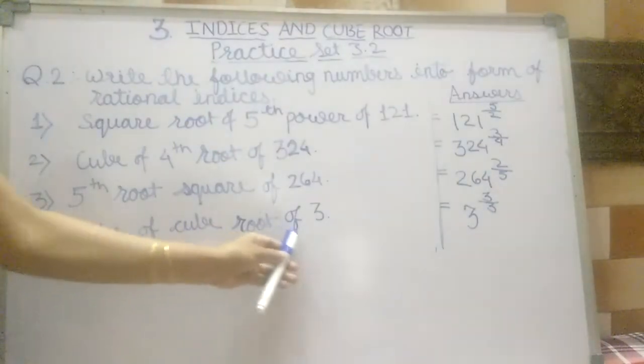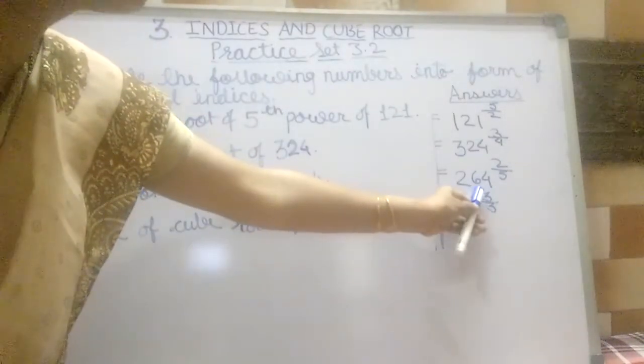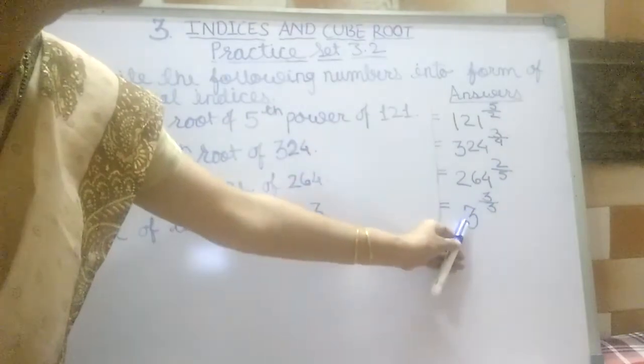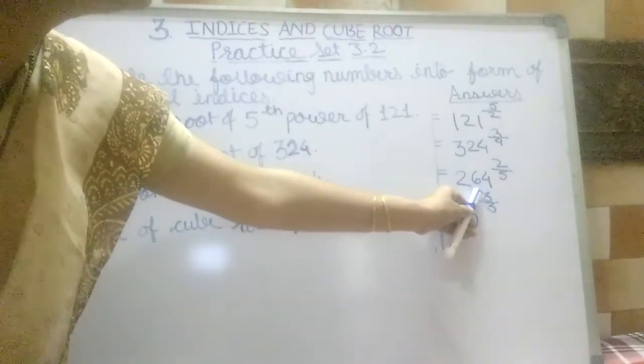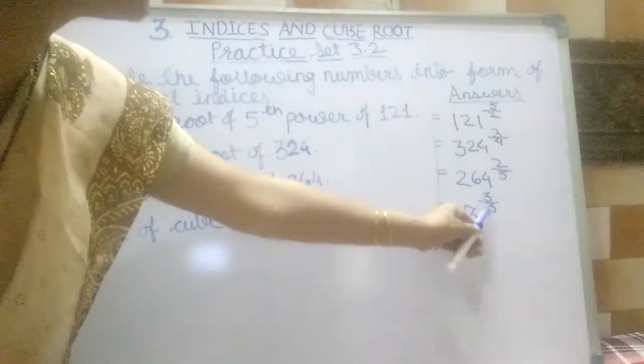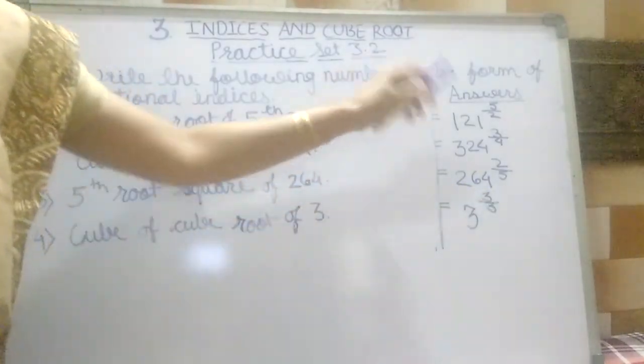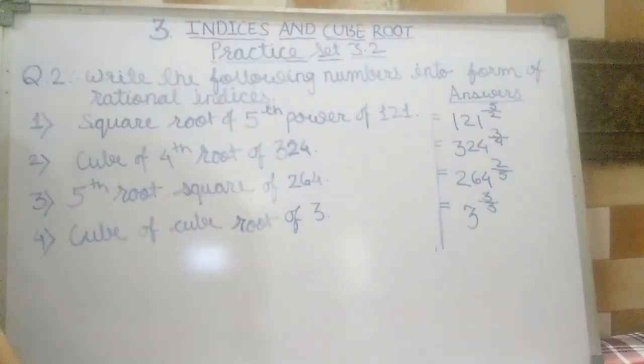Cube of cube root of 3. 3 is the base. 3 is the numerator and 3 is the denominator, so 3 by 3 is the index. These are all our questions. Thank you.